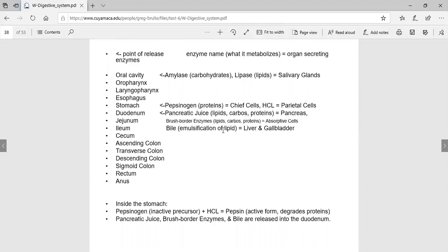Bile, make sure you know it emulsifies fat. It doesn't chemically break it down. When I say emulsify, I mean it takes a big globule of fat and makes it into a bunch of little globules. They're not chemically broken down. Lipase chemically breaks it down. Make sure you know bile is made in the liver but stored in the gallbladder. Pepsinogen is made by chief cells, hydrochloric acid is made by parietal cells.